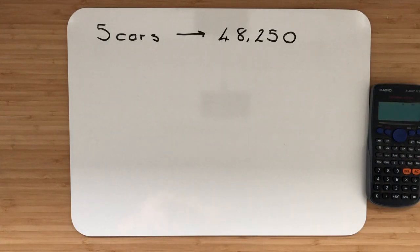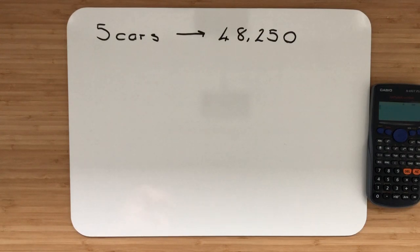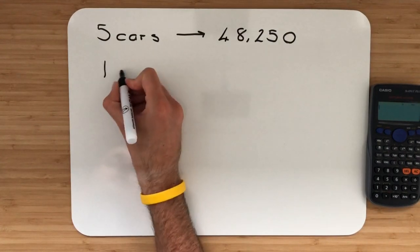To find any other quantity the best thing that we want to do is always just find out the value of one thing. Once you've got one thing you can calculate anything. So I want to find the value of one car.